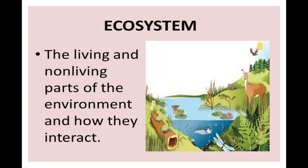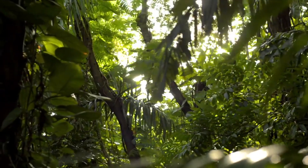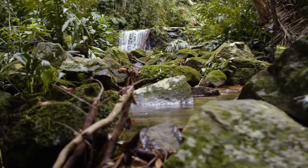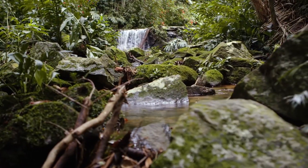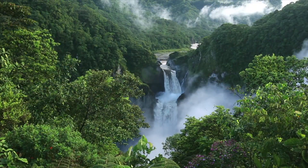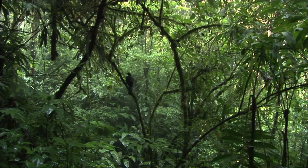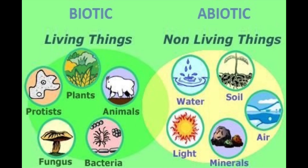An ecosystem is made up of all the living and non-living things in an area. Plants, animals, and man make up the living components or biotics in an ecosystem, while non-living things or abiotics include water, sunlight, rock, soil, and air. A swamp, a pond, an ocean, and a forest are examples of an ecosystem.